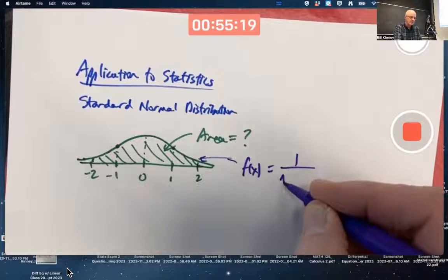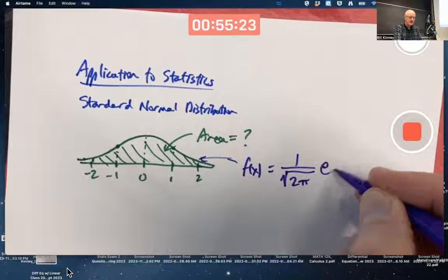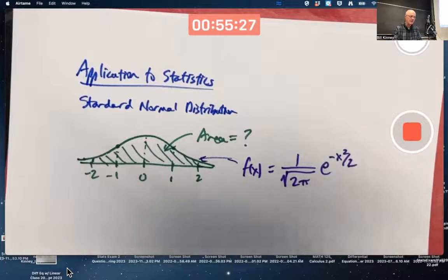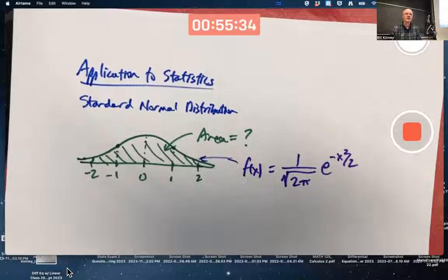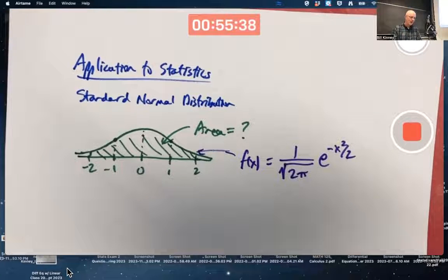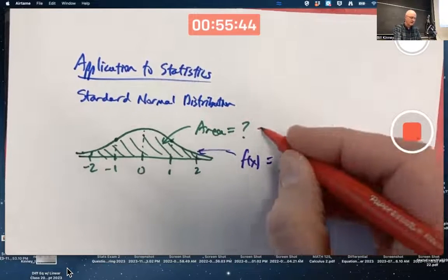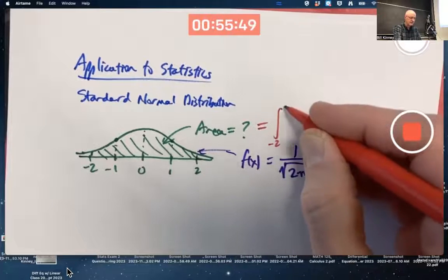It's 1 over square root of 2 pi times e to the negative x squared over 2 power. That's the formula for the standard normal curve. That's not on the test. You do not need to know the formula. I want to know what that area is. If this is the formula for this curve, by what we've been talking about, the area has got to be the integral of the curve from negative 2 to 2.